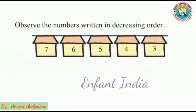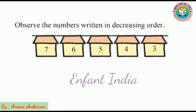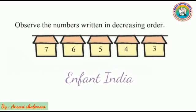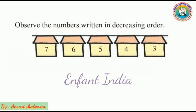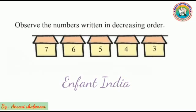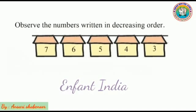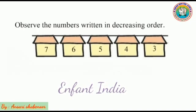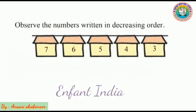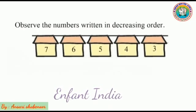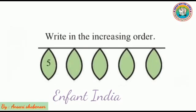Observe the number written in decreasing order. Here some numbers are given to you in which order? Decreasing order. Decreasing order means largest number to smallest number. So here is the number 7, 6, 5, 4, and the last 3. Which is the large number? Bigger number 7. Or smallest number, number 3. So which order is this? Decreasing order.